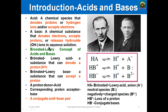The Bronsted-Lowry concept defines what we mean by a Bronsted-Lowry acid and a Bronsted-Lowry base. A Bronsted-Lowry acid is a substance that can donate a proton. A Bronsted-Lowry base is a substance that can accept a proton. Simply put, acids are proton donors and bases are proton acceptors.